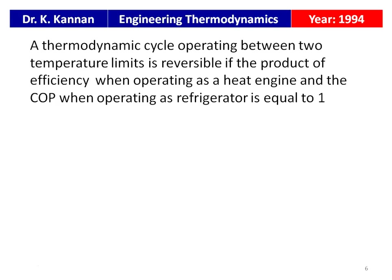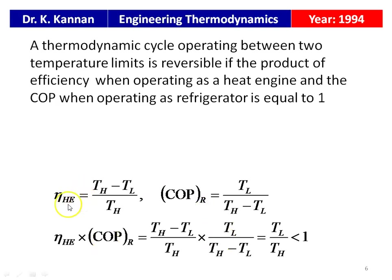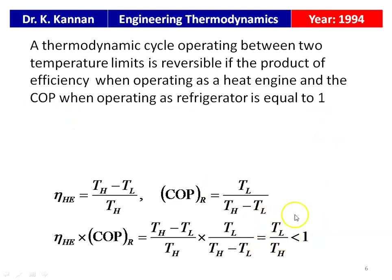The next question from the 1994 question paper: a thermodynamic cycle operating between two temperature limits is reversible if the product of efficiency when operating as a heat engine and the COP when operating as a refrigerator equals 1. Heat engine efficiency = (TH − TL) / TH; COP of refrigerator = TL / (TH − TL). Their product = [(TH − TL) / TH] × [TL / (TH − TL)] = TL / TH, which is less than 1 — not equal to 1 as stated.